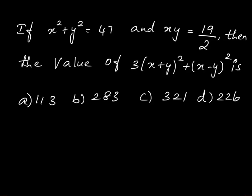If x squared plus y squared is equal to 47 and xy is equal to 19 by 2, then the value of 3 into x plus y the whole square plus x minus y the whole square is: 113, 283, 321, or 226.